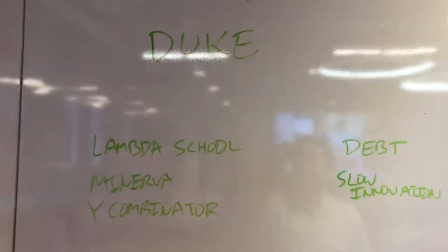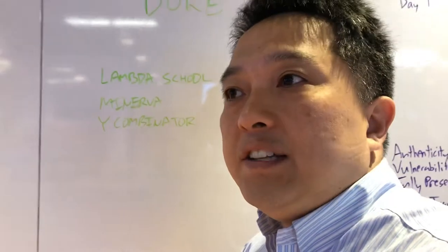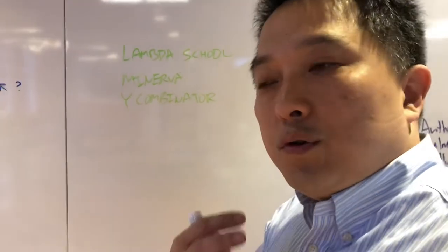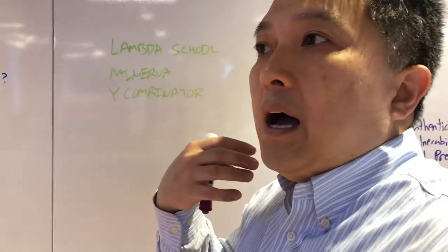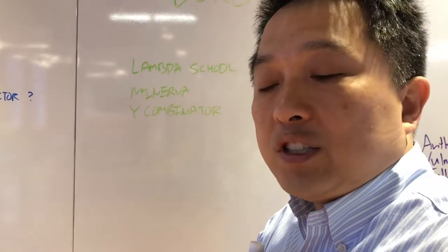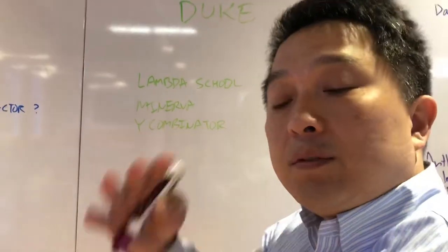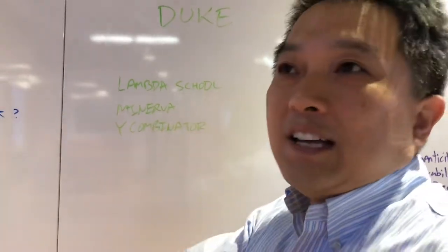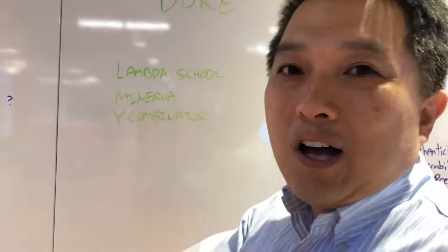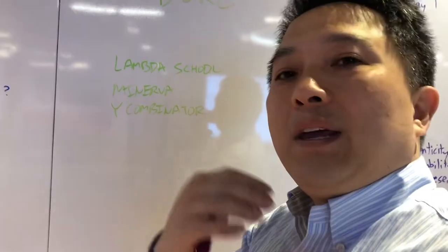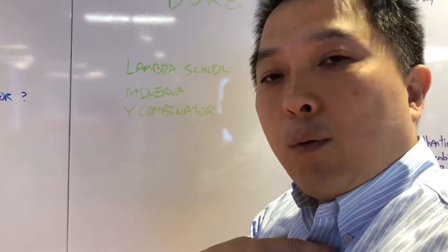And then the last thing here is transforming Duke. Duke and higher ed in general is facing a ton of pressure and how do we infuse innovative thinking into our work at Duke Innovation and Entrepreneurship and all of the partner schools that we have across campus, including Fuqua, Trinity, Pratt, Nursing, Sanford, Nicholas, grad school, law school, medical school.